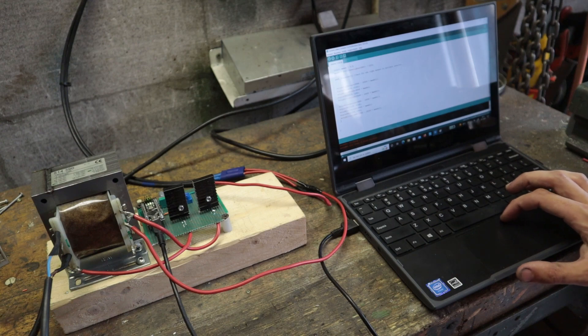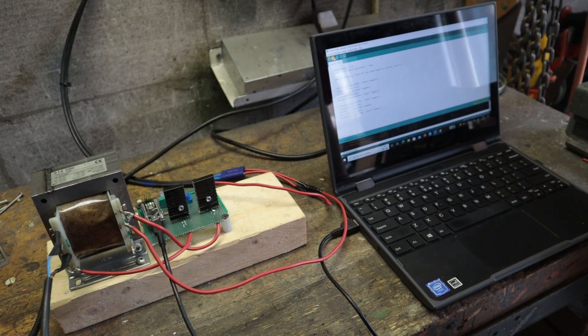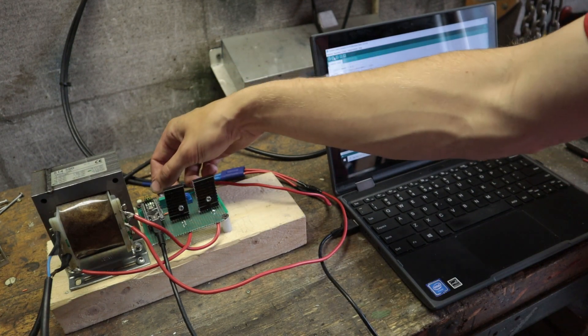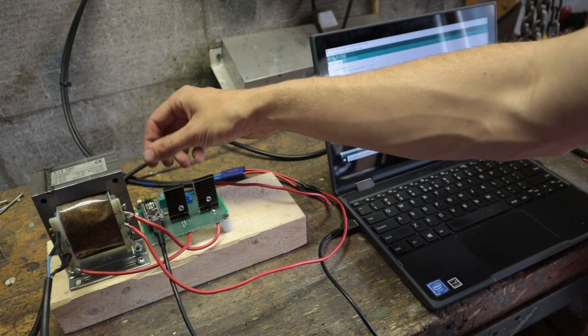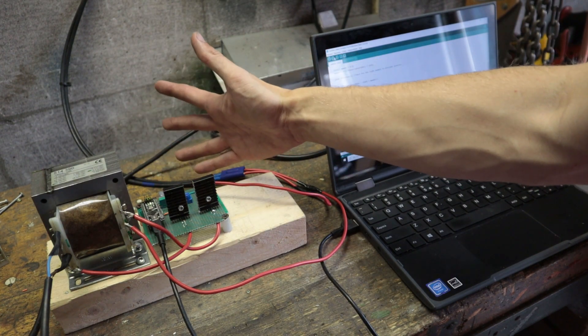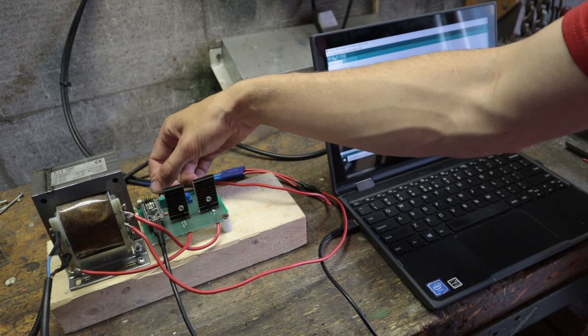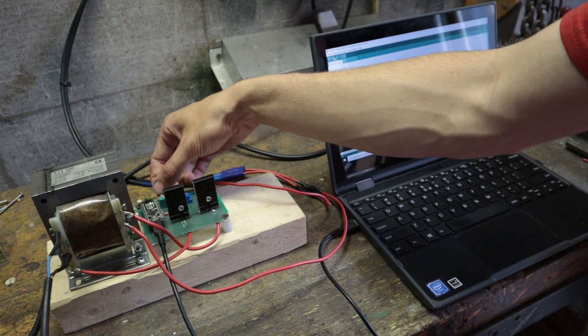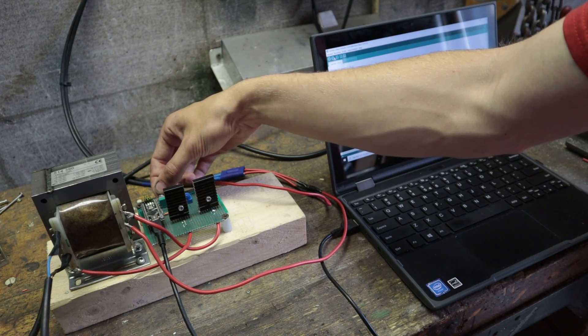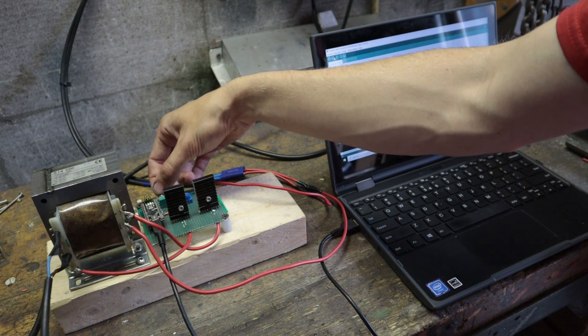So now I'm going to upload this code, and in theory we're going to have a working grid tied inverter. Now the potentiometer that's on here still works, so when I turn this potentiometer, that'll increase the duty cycle and therefore increase the amount of power that we feed back into the grid. You can actually hear it's producing a bit of noise.